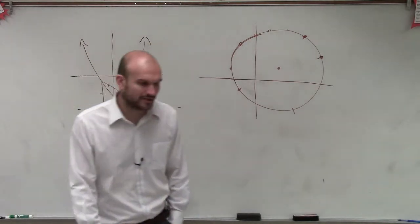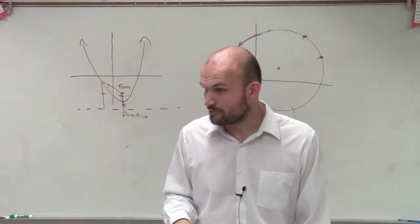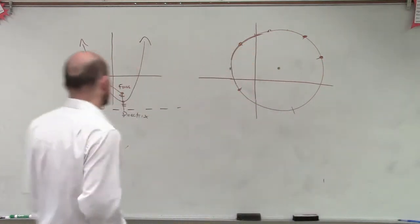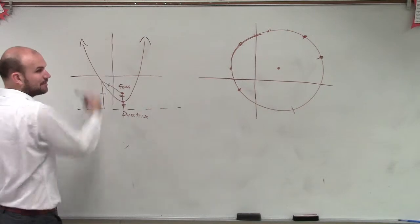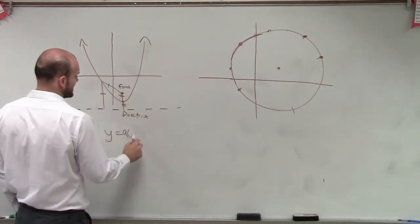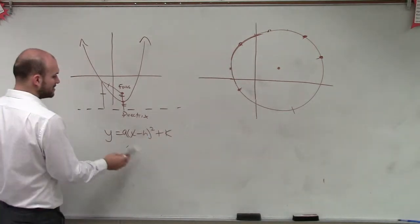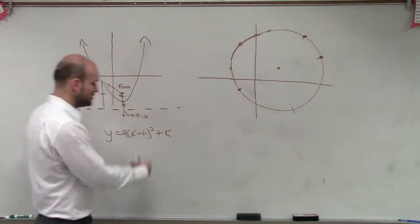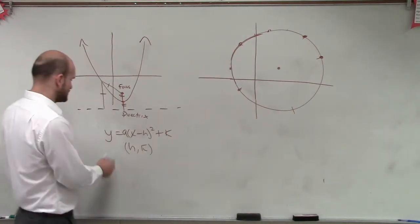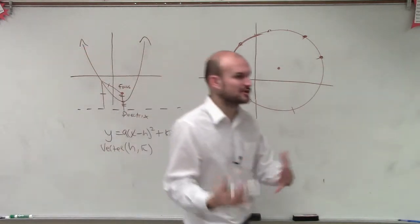So ladies and gentlemen, when we were looking and we were talking about parabolas, I gave you guys a new formula. Actually, I didn't give you a new formula — I used a kind of a vertex formula to describe a parabola. We said a parabola that's vertical is going to be y equals a times x minus h squared plus k. And the important thing that was helpful about this is when you know this, you know h comma k is your vertex. And you guys could easily graph this by using transformations.